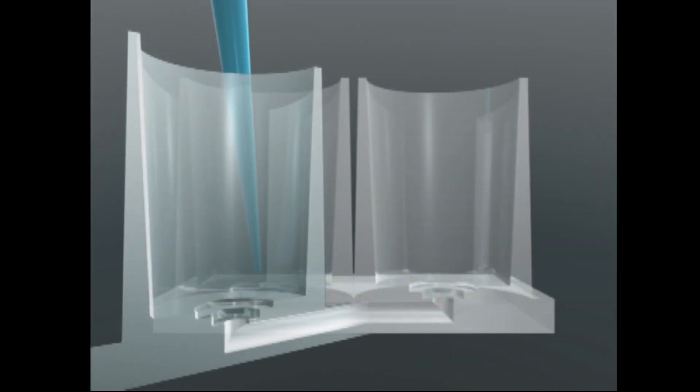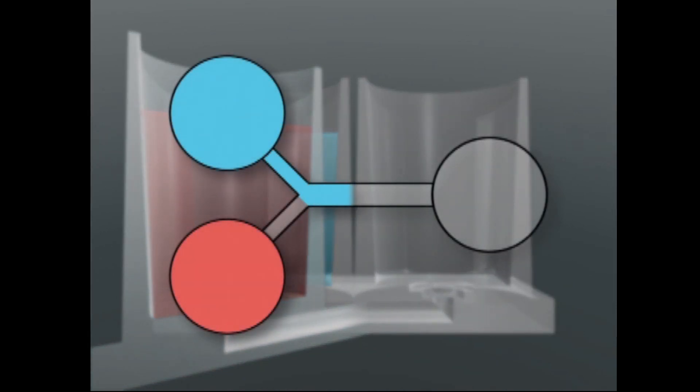Some BioFlux plates have an additional input well, which allows a second reagent to be introduced, such as a washing buffer, media, or drug compound. These two sources can be dynamically switched to allow for time-resolved addition of reagents or drug compounds. The two input channels can also be added simultaneously to enable applications such as wound healing and chemotaxis.